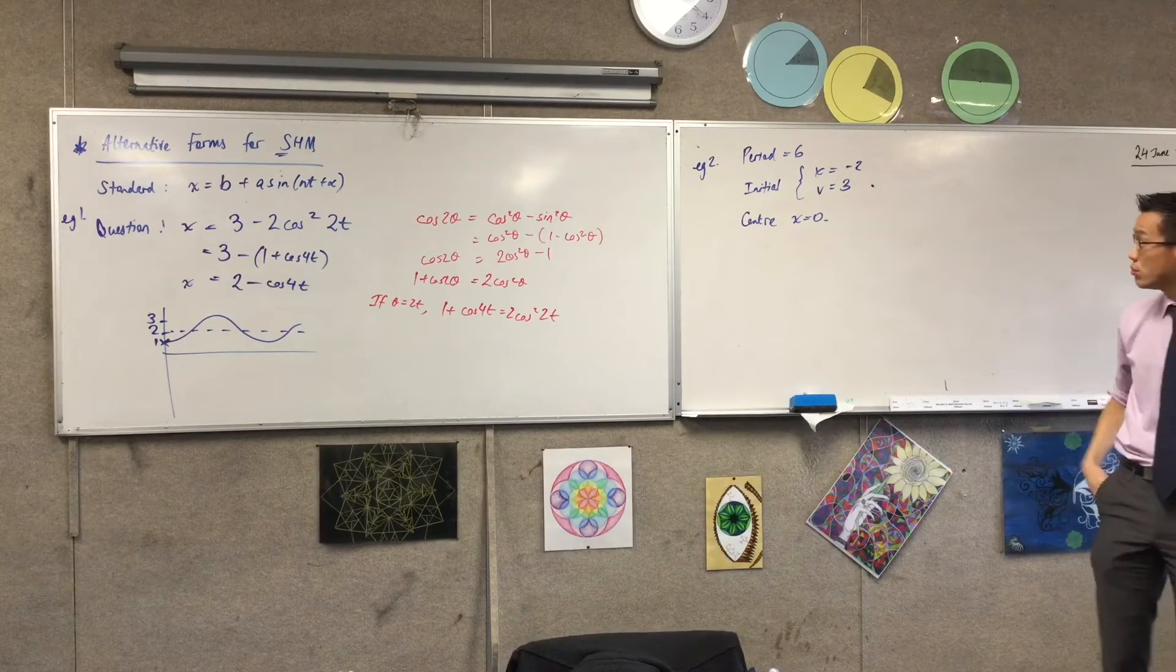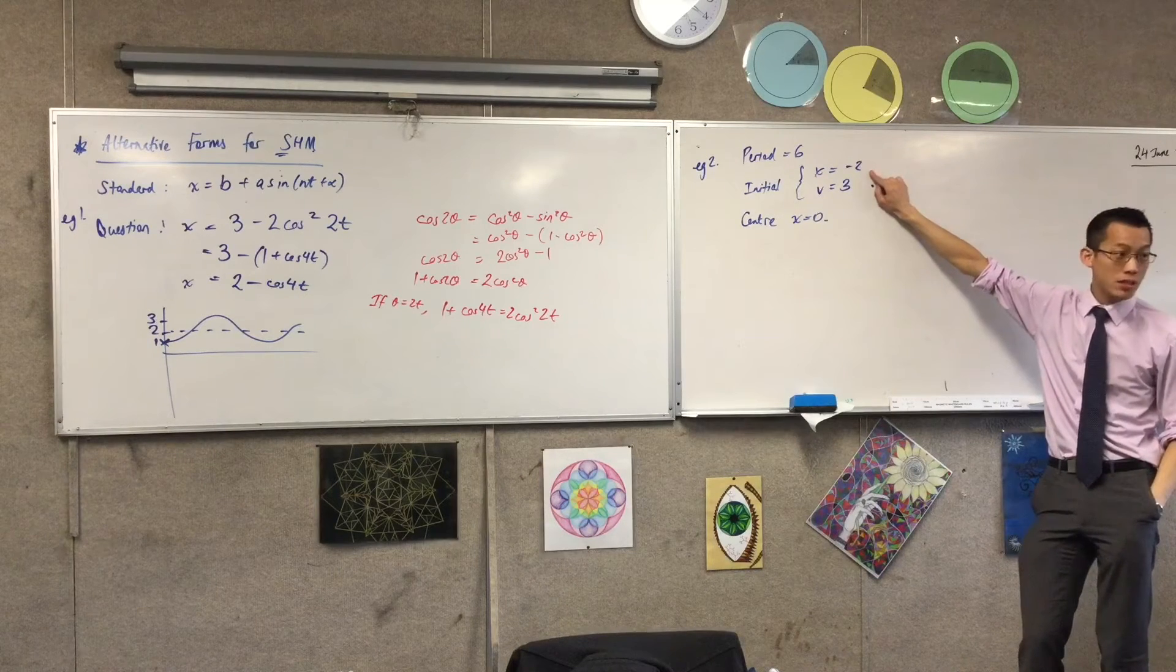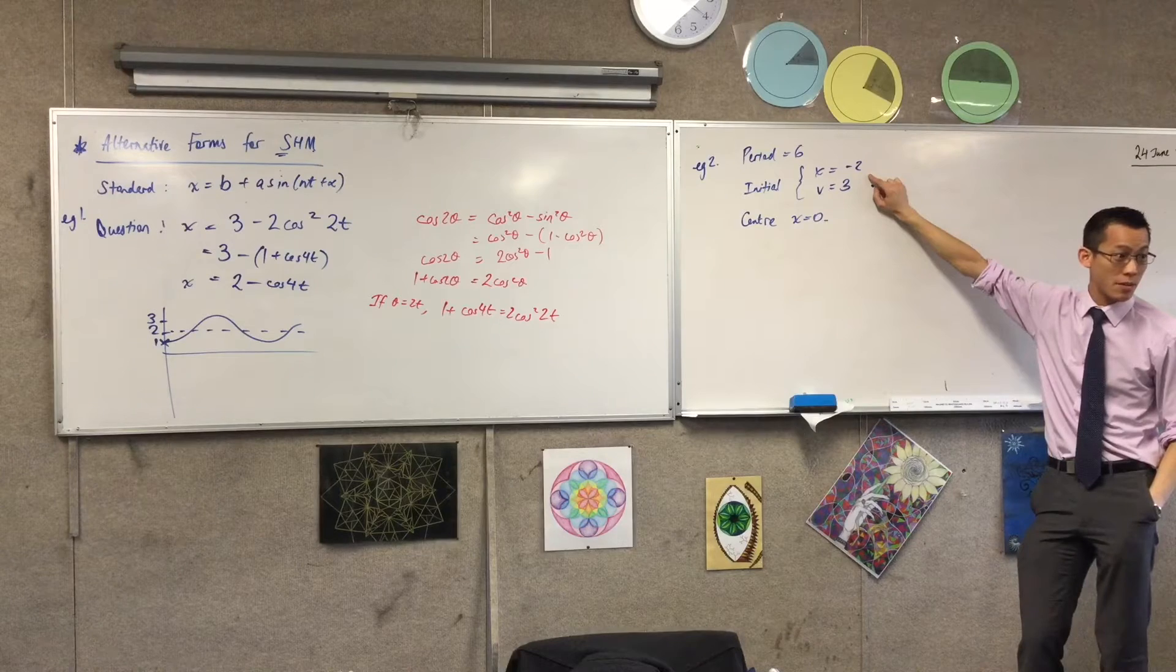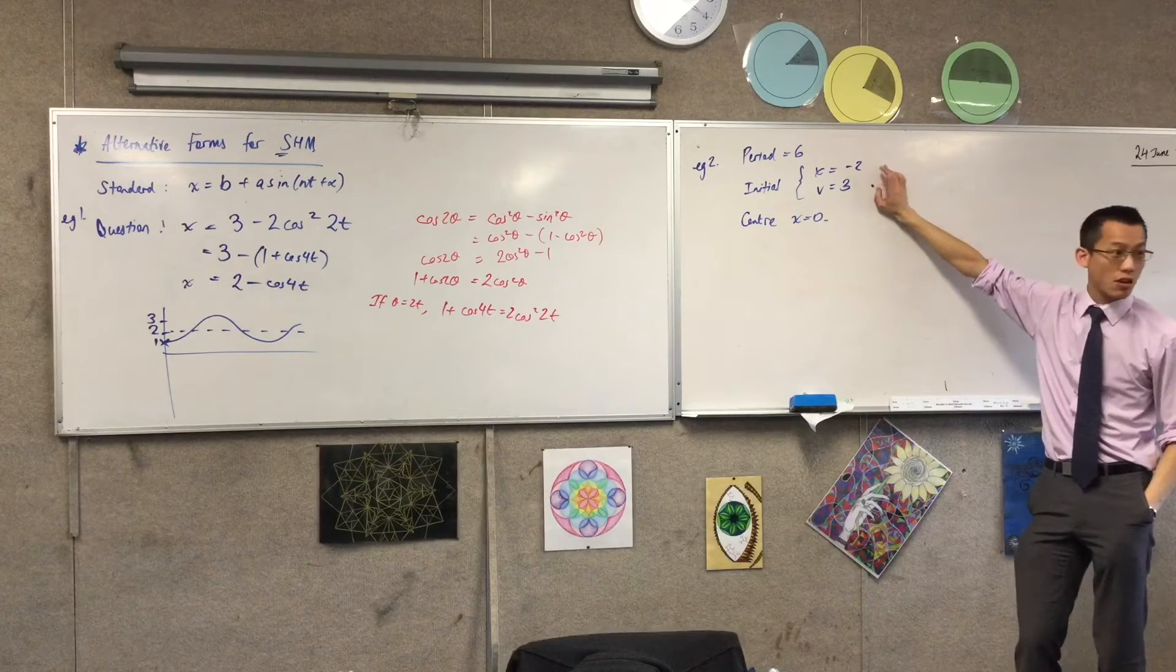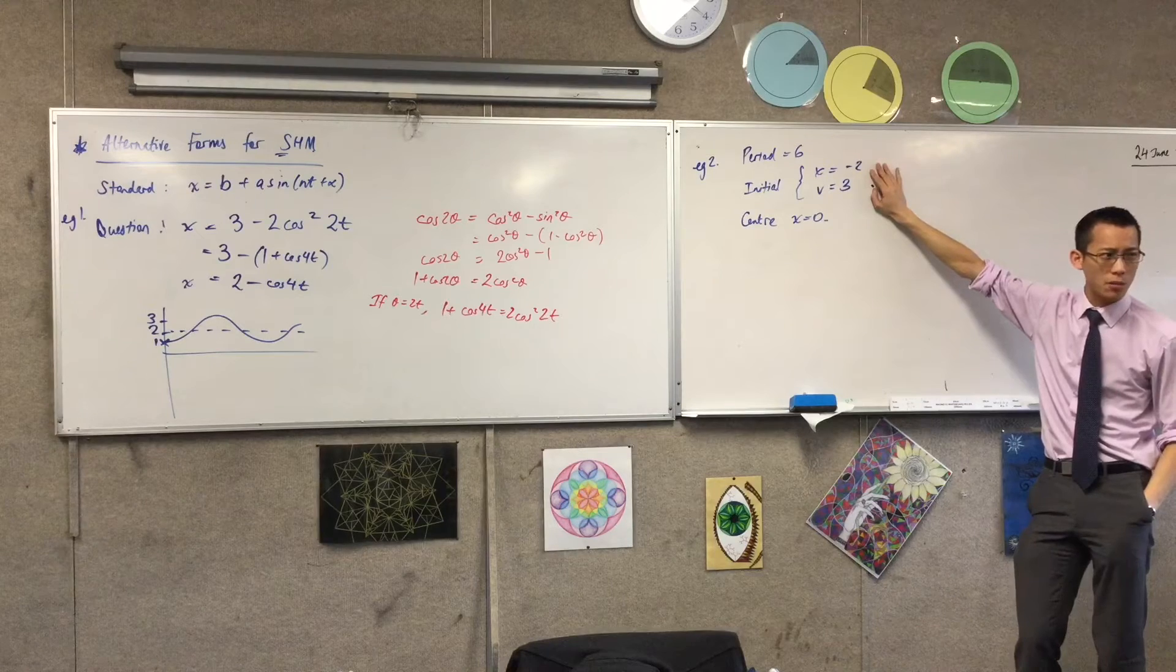How far can this thing get from the center of motion? Answer, don't know. You don't know. You could say two. It's got to be at least two, but who says you're still starting at an extreme? Nothing has told you you're starting at an extreme at the moment. In fact, I don't think I can be starting at an extreme. Why? How do I know I'm not starting at an extreme?